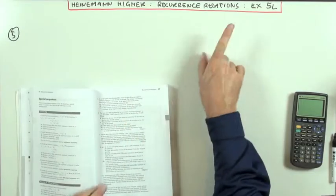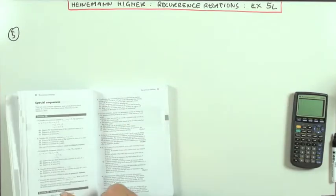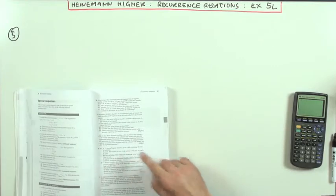Anyone higher? Chapter 5 Recurrence Relations, mixed questions, exercise 5L at the end, number 5.